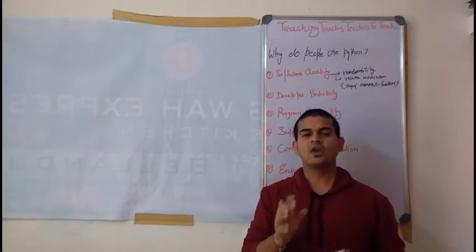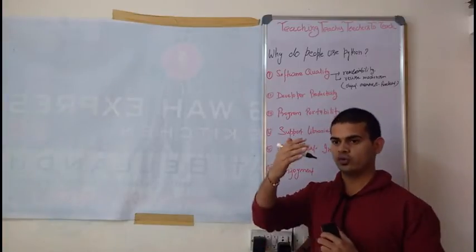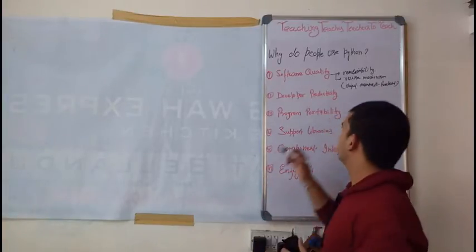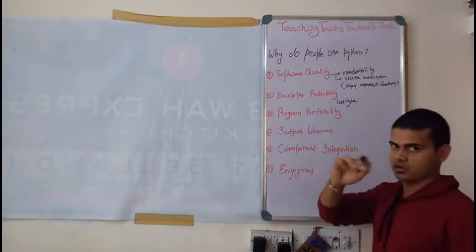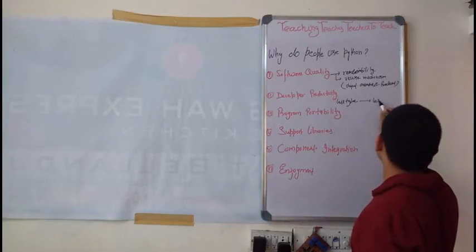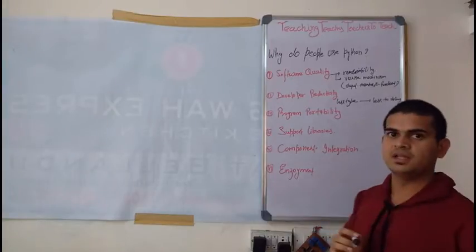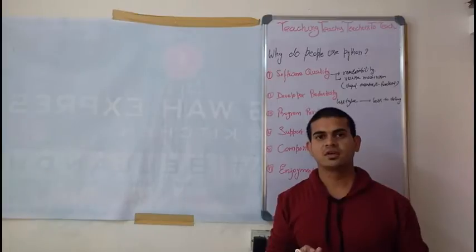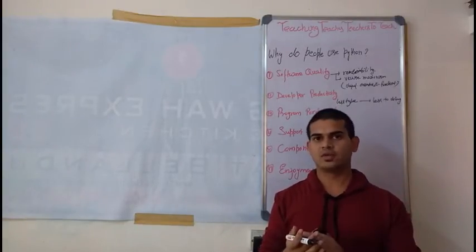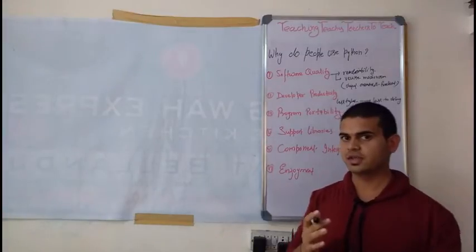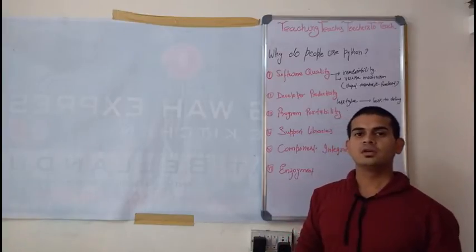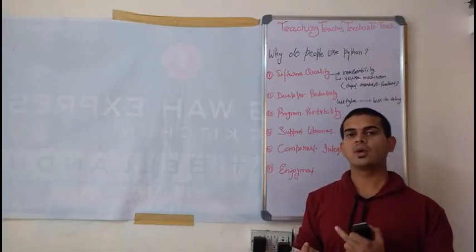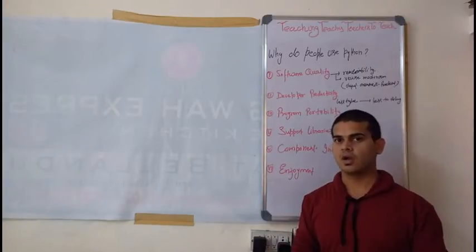For developer productivity, if I talk about LOC — Lines of Code — the source code we write is the LOC. The formula is: less type, less to debug. Python has less syntax — it is one-third or one-fifth of any other language. Because the syntax is less, you need less time to debug, saving testing and development cost.